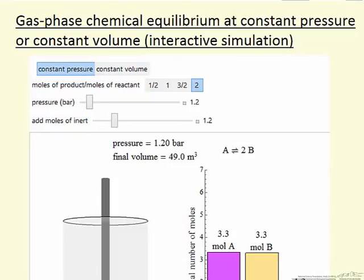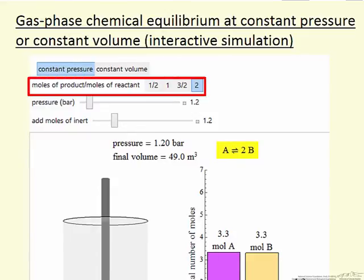In this simulation, we are looking at chemical equilibrium for a gas phase reaction. In this case, A goes to 2B, where we can change the number 2 to 3/2, 1, or 1/2, and we have two options.